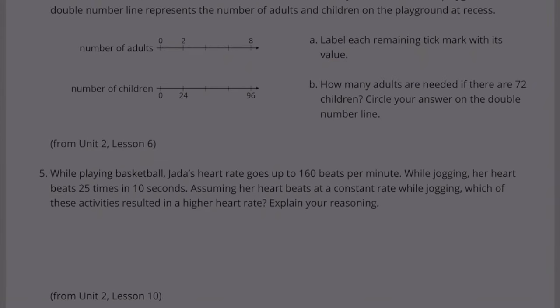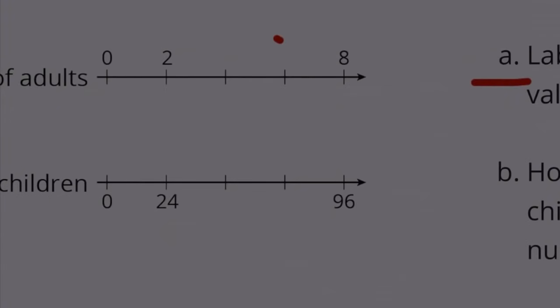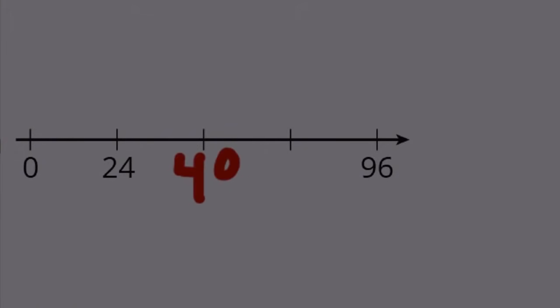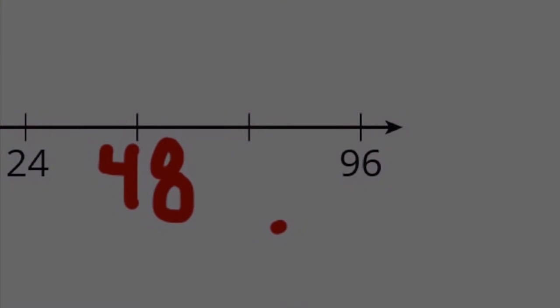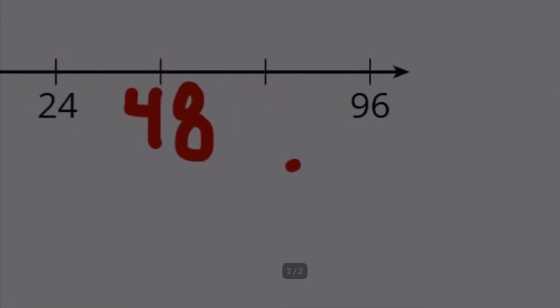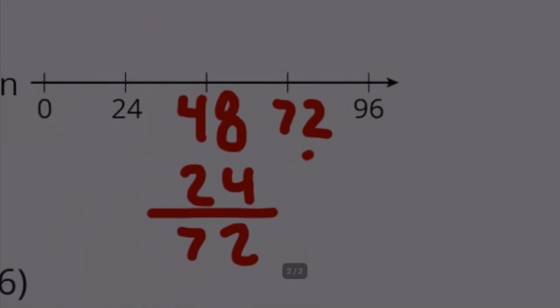Number 4. At a school recess, there needs to be a ratio of 2 adults for every 24 children on the playground. The double number line represents the number of adults and children at recess. Label each remaining tick mark with its value: 0, 2, 4, 6, 8 for adults; and 0, 24, 48 for children. We're counting by 24, so adding 24 gives us 72 and 96.